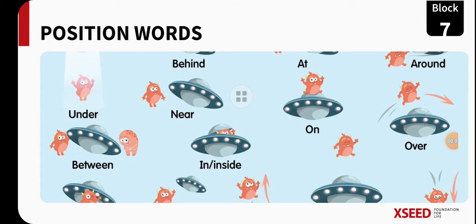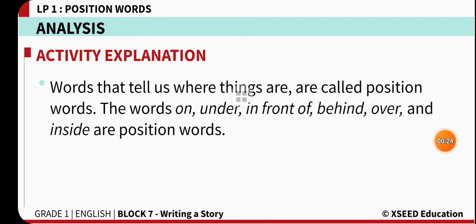Students, good morning. This is Block 7: Position Words. These are position words like under, behind, near, between, in or inside, on, at, around, over. These all are position words. What are position words? Words that tell us where things are are called position words. Under, in front of, behind, over, and inside are position words.